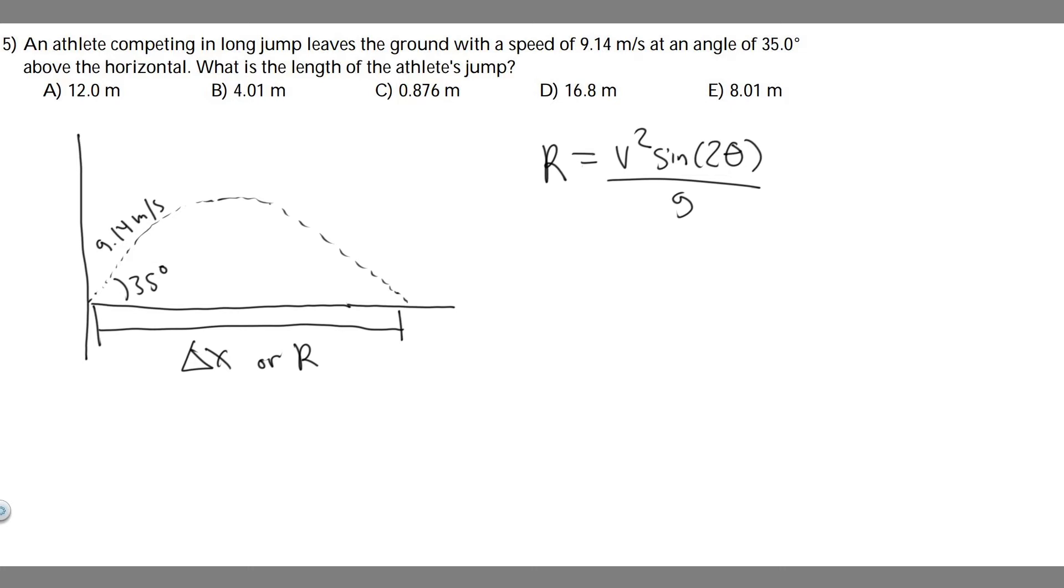The formula you can use to solve for it is v squared times the sine of 2 theta divided by g.